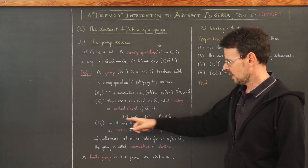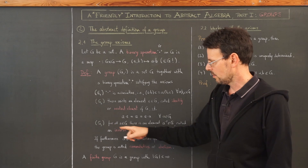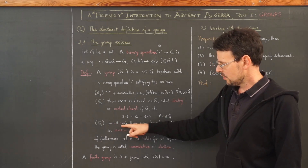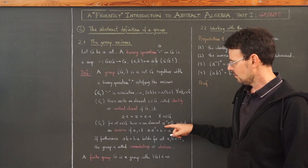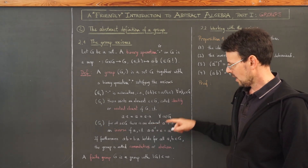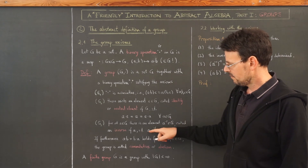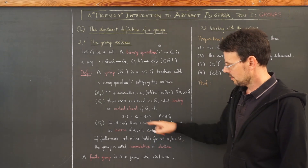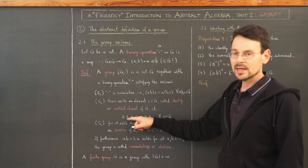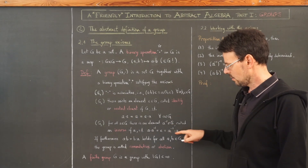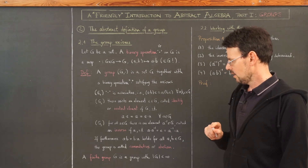Do not confuse it with normal multiplication — it can be in some instances, but it doesn't have to be. We have an identity satisfying this, and group axiom number three: for each element of this set there must be an inverse element a⁻¹ such that combining a with its inverse gives the identity, and also the other way around — a⁻¹ combined with a gives the identity.